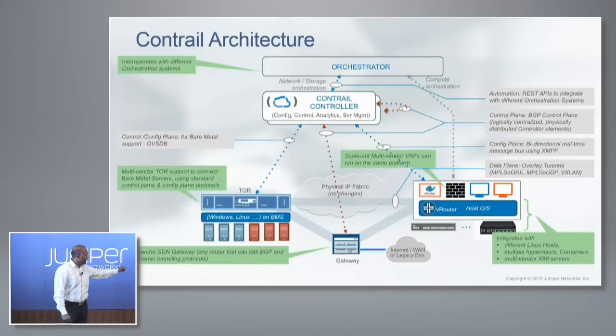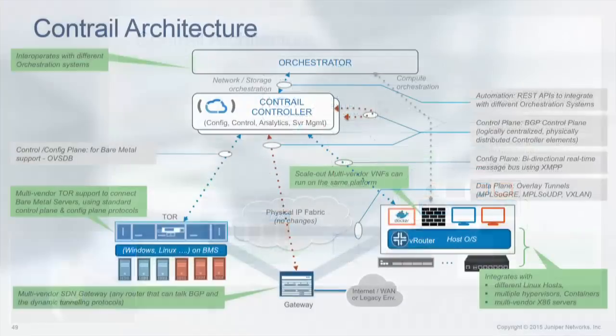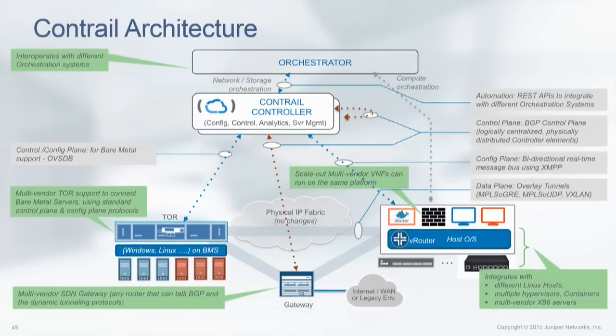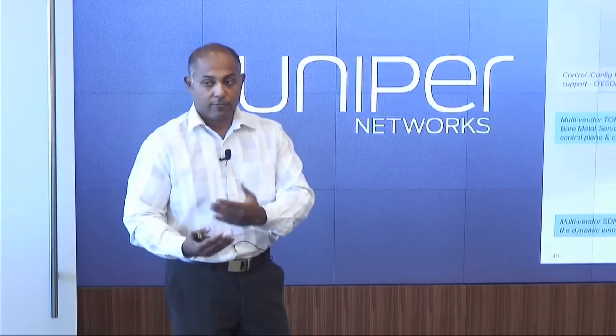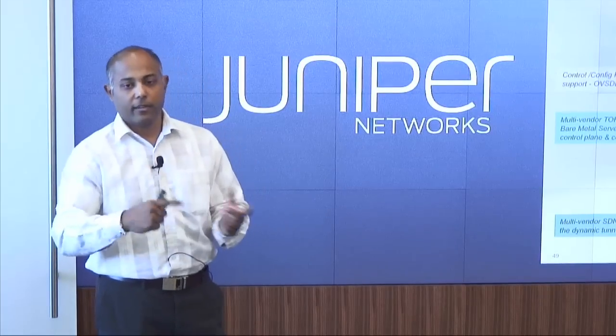The Contrail controller also talks to a top-of-rack switch. In scenarios where you want a bare metal server as part of a virtual network, we talk to the top-of-rack switch using the OVSDB protocol, making it multi-vendor since QFX 5100 supports OVSDB. That way you can have a blue or red virtual network within which you can have bare metal servers as well as VMs and containers. We also use standard hardware VTEP schema for OVSDB, and we do physical service chaining using the MX.